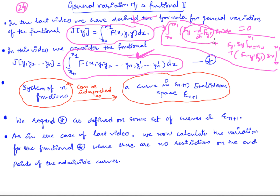So this thing has to be 0. If you want to obtain Euler's equation, the Euler's equation will remain the same. This term will become 0, but the arbitrary constants will be obtained from the condition that the boundary terms should be 0. We will see that later. For now, let us derive the variation for this particular functional.